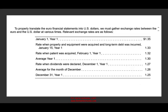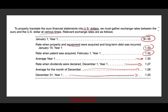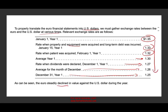To properly translate the euro financial statements into U.S. dollars, we must gather exchange rates between the euro and the U.S. dollar at various dates. The rate at the beginning of the year was $1.35. The rate when property and equipment were acquired was $1.33. The rate when the patent was acquired was $1.32. The average rate for the year is $1.30. The rate when the dividend was declared is $1.27. The average for the month of December is $1.26, and December 31st is $1.25. Notice the euro is steadily declining — we set up the example this way to make a point at the end.